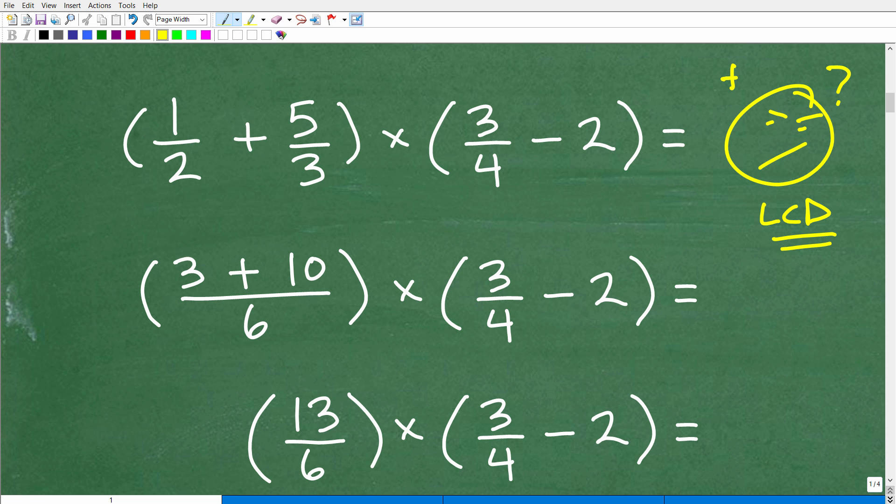So when we're adding and subtracting fractions, we have to make sure that the denominators of those fractions are the same. If they are not, we have to find the LCD, and we got to go through all this kind of rigmarole to fix up the fractions such that we can add or subtract them. Hopefully that makes sense to you.